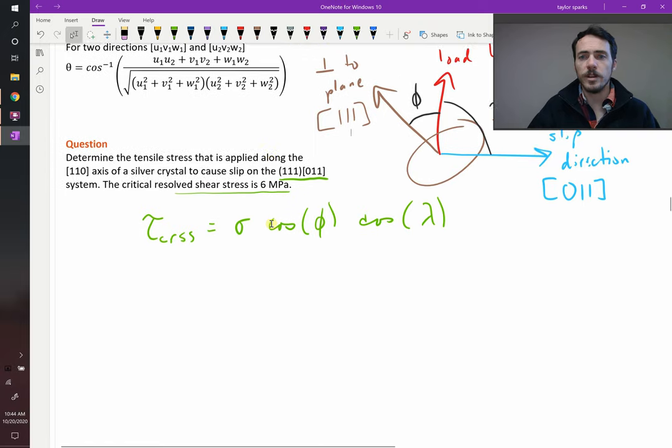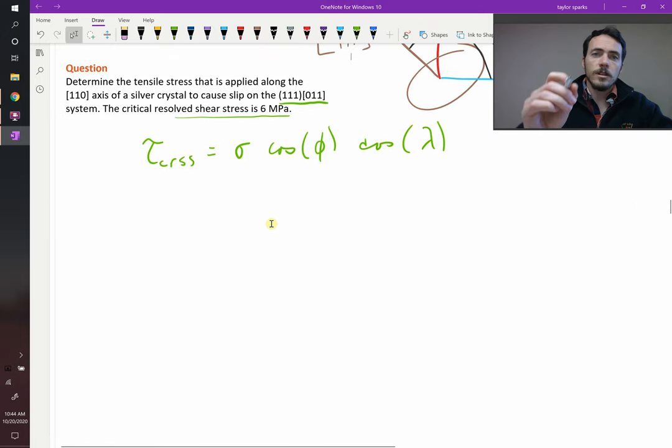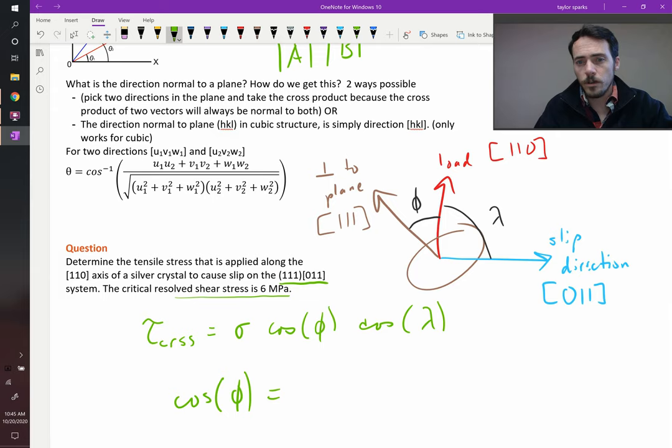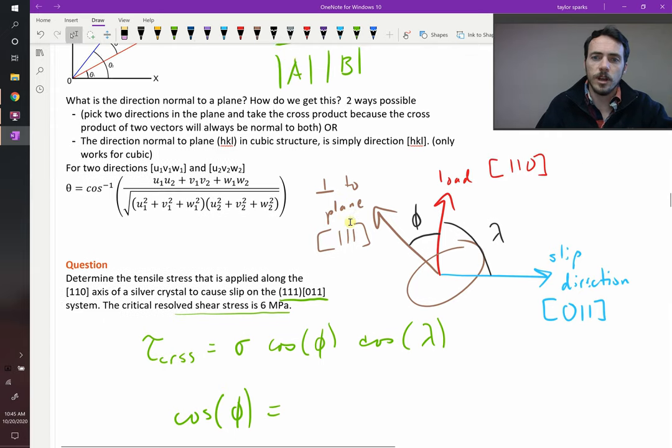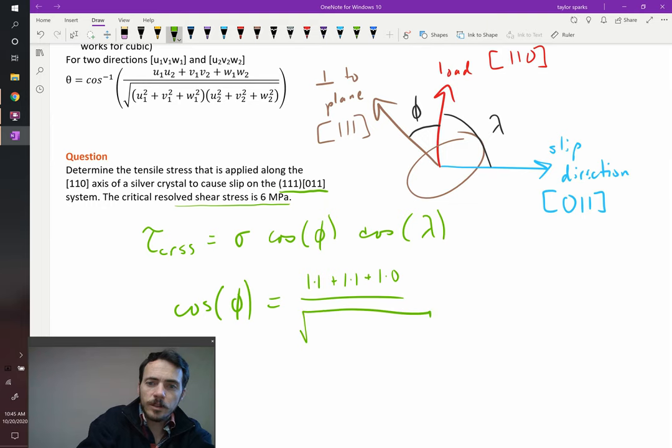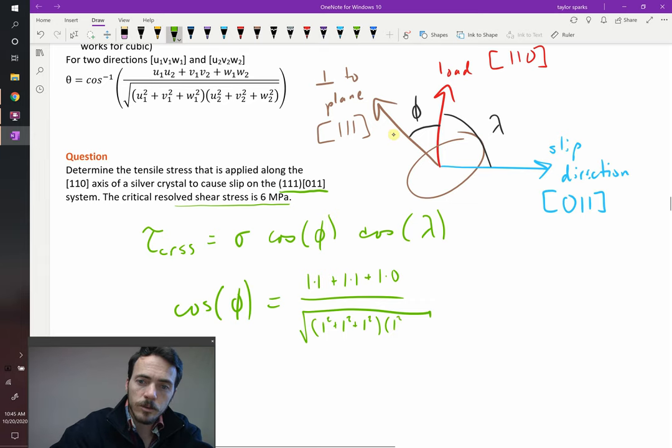Alright, so now we're ready to go ahead and do this. So let's figure out the dot product between those. We want cosine phi. So cosine of phi is going to be the dot product between [1-1-0] and [1-1-1]. So let's dot those together. The dot product will be equal to 1 times 1 plus 1 times 1 plus 1 times 0. Now we need to take the length of those. We're going to take the square root of 1 squared plus 1 squared plus 1 squared, multiplied by the length of the other vector, which is just going to be 1 squared plus 1 squared plus 0 squared. I find this to be equal to 2 divided by square root of 6.